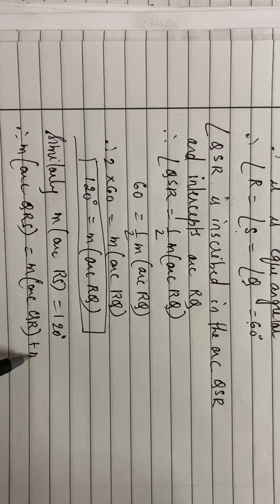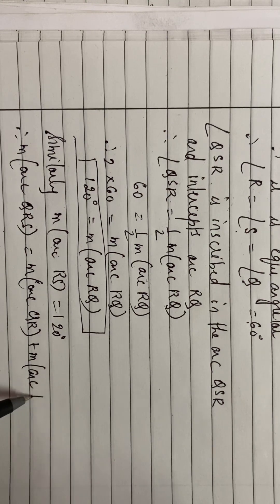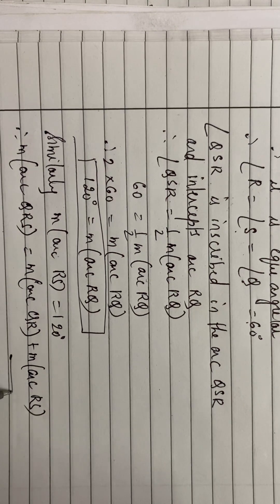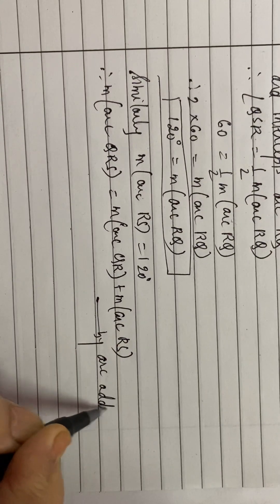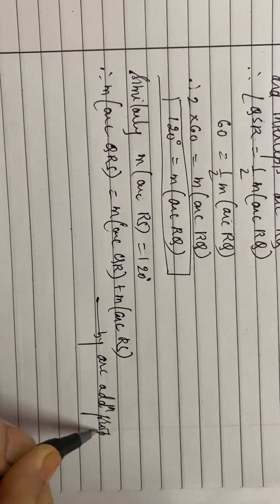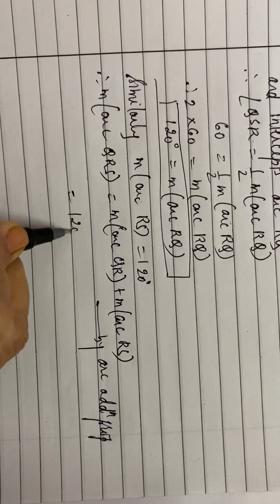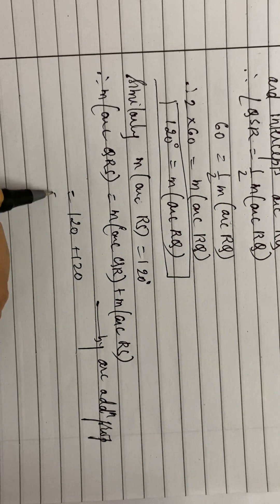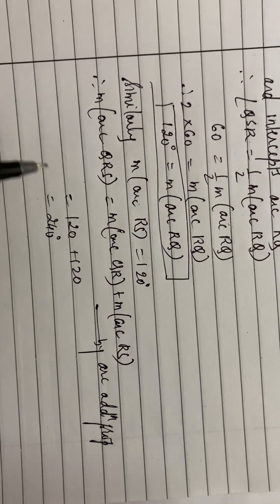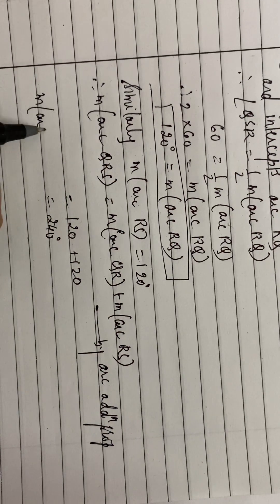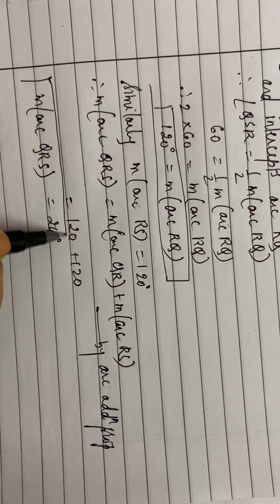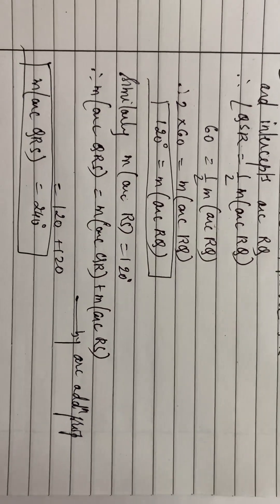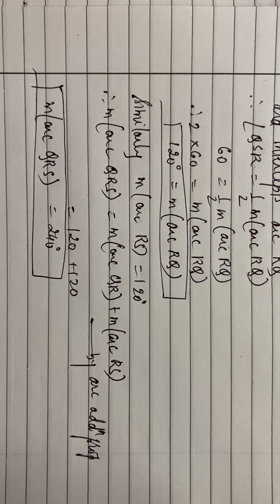By reason of arc addition property. So that makes 120 plus 120, that is 240 degrees. Hence proved. We have to prove that the measure of this arc is 240. Okay?